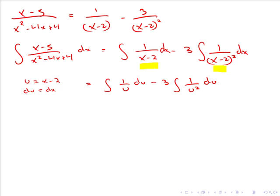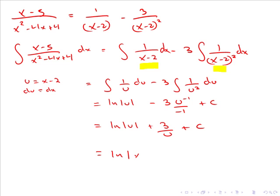Integrating, we get ln|u| minus 3 times u^(-1)/(-1) + c, which simplifies to ln|u| + 3/u + c. Substituting back u = x-2, our final answer is ln|x-2| + 3/(x-2) + c.